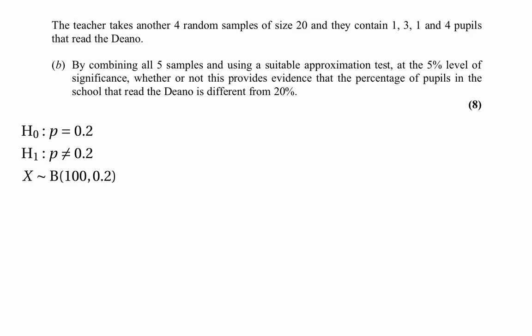We don't have tables for n equals 100, so we need an approximation. Since p equals 0.2 isn't particularly small, we don't use the Poisson approximation. But n times p equals 20 and n times (1 minus p) equals 80, both greater than 5, so we can use the normal approximation to the binomial.